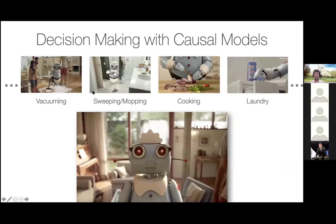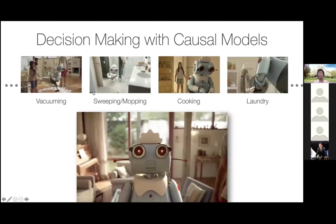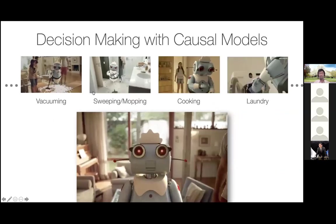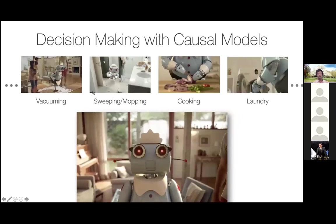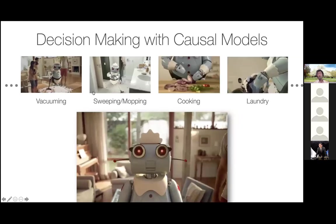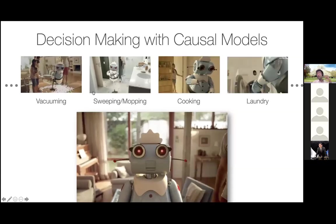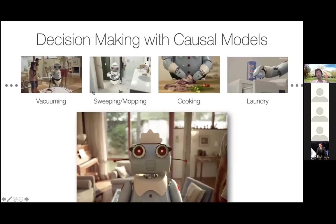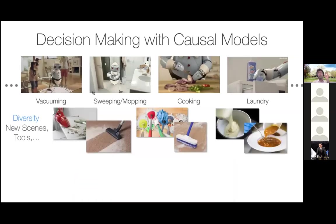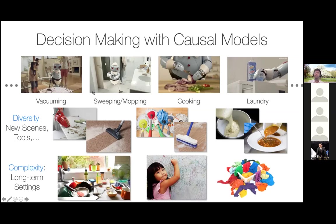A lot of the motivation of my work comes from things that are very close to home — kitchen or household jobs. What we really want is systems that can do a variety of tasks, not just one-off tasks, in a diversity of scenes, with objects you may not have seen, and in more complex settings. Maybe you had a party and the sink is fuller than usual, or maybe the child forgot to do laundry and so on and so forth.